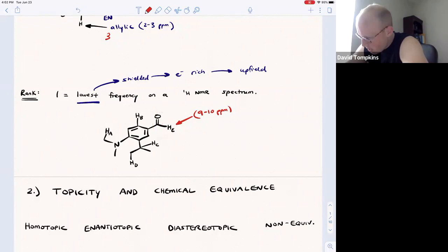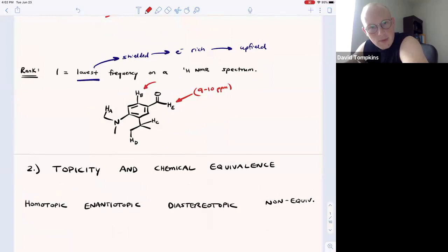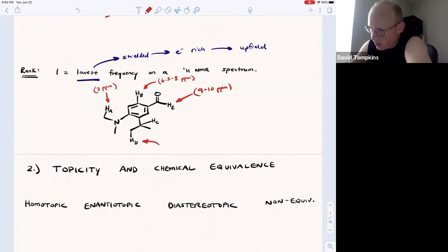The proton on the aryl ring here is quite downfield. It would be between 6.5 and 8, the aryl regime. The proton adjacent to nitrogen is one away from an electronegative atom, and we said that would be around 3 or so ppm. Proton D is aliphatic, or is on sp3 carbon and is only adjacent to another sp3 carbon, so that should be around 1, maybe a little higher. And then HC is on an sp3 carbon as well, but it is benzylic or one away from pi system in the ring, and so we would assume that would be around 2, maybe 3 ppm.